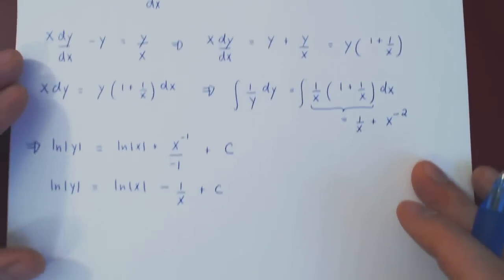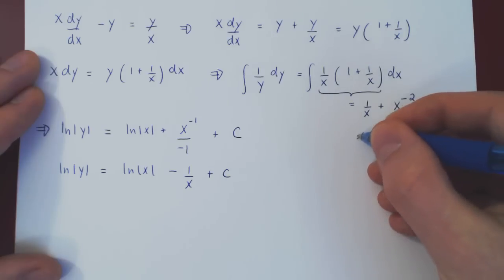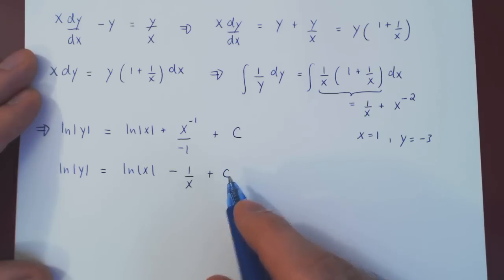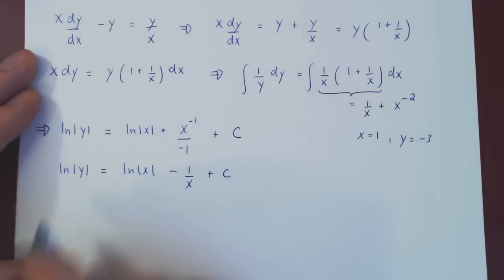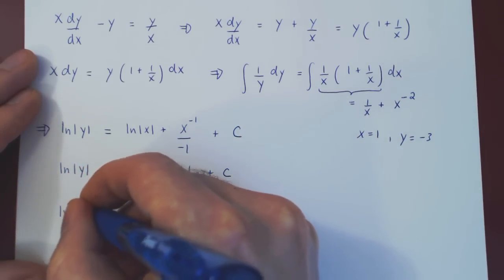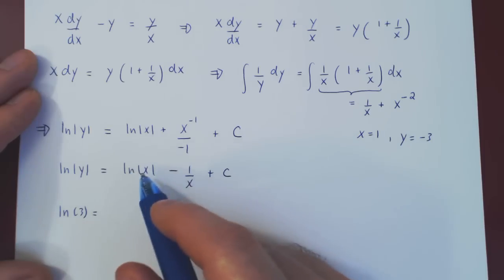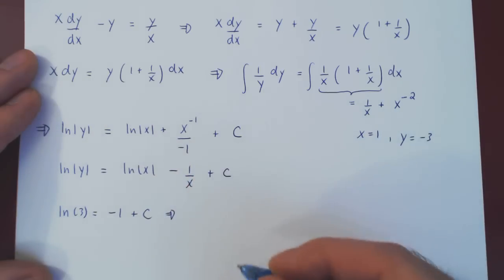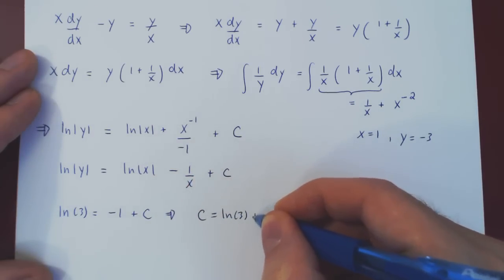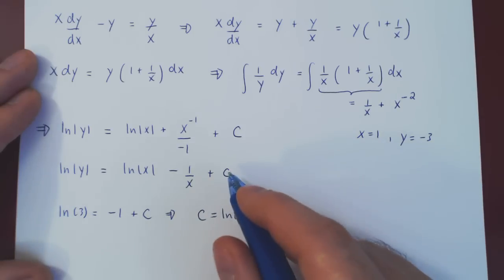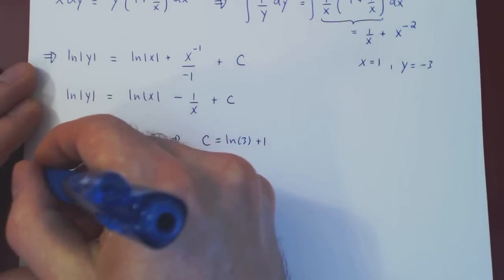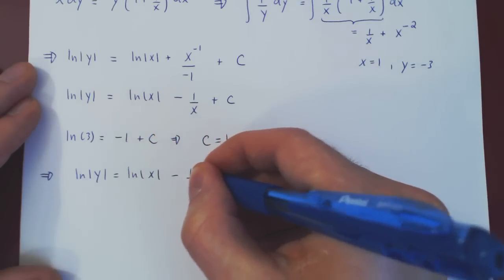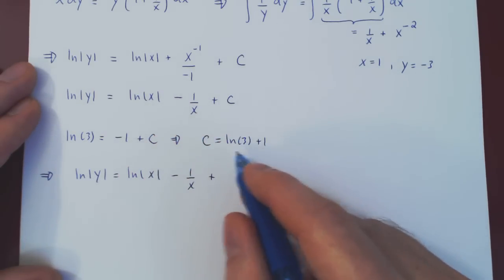Substituting x = 1 and y = -3 to solve for c: ln|{-3}| = ln(3), and ln(1) = 0, so we get ln(3) = 0 - 1/1 + c, which is ln(3) = -1 + c. Adding 1 to both sides gives c = ln(3) + 1. Plugging back in: ln|y| = ln|x| - 1/x + ln(3) + 1.